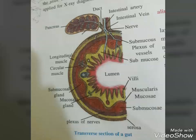The digestive glands associated with the alimentary canal include the salivary glands, the liver, and the pancreas. Saliva is mainly produced by three pairs of salivary glands: the parotids, present in the cheek; the submaxillary or submandibular glands, located at the lower jaw; and the sublingual glands, below the tongue.